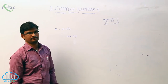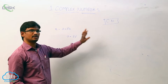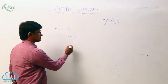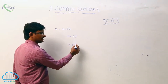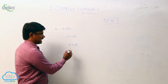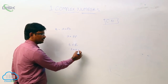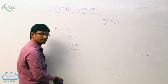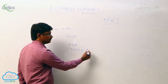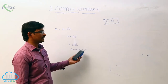Every real number is also a complex number. For example, 5 belongs to the real numbers, and we can write it as 5 plus 0 times i, so clearly it belongs to complex numbers as well.